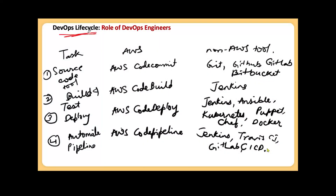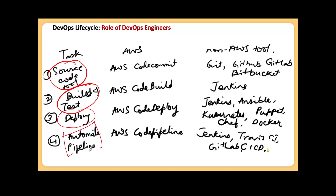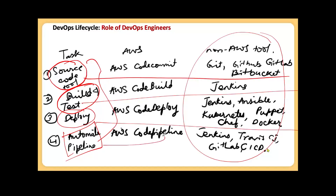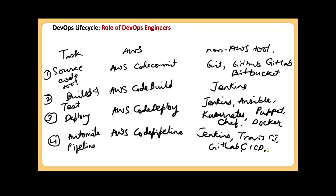When we say continuous integration and continuous delivery, we have different tasks — source code management, we have to build and test our application, we need to deploy our application, and most importantly we need to create a pipeline. For all these tasks we need a tool, and for each different stage there is a different tool. But here we are going to use one tool called Azure DevOps to do all these tasks.